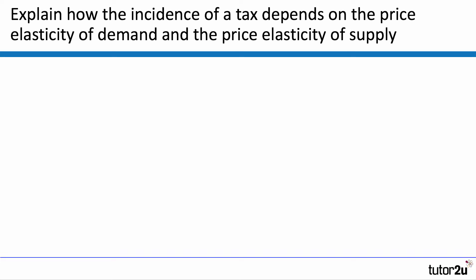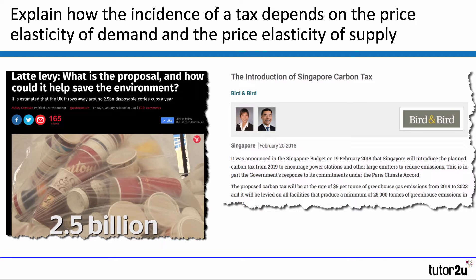Here's a past exam question: Explain or analyse how the incidence of a tax depends on the price elasticity of demand and the price elasticity of supply. Taxation is in the news at the moment. The government is thinking of introducing a new tax on single-use disposable cups used, for example, in the coffee shop industry, plastic bottles and things. And just a few days ago in Singapore, they confirmed that the Singapore government is going to introduce a carbon tax as part of its anti-pollution strategy.